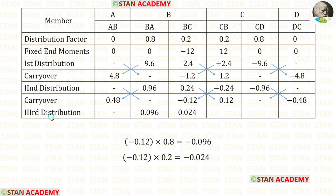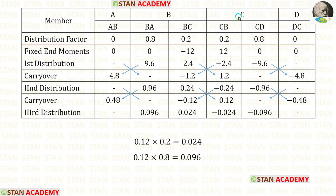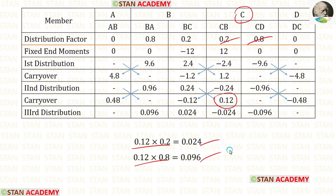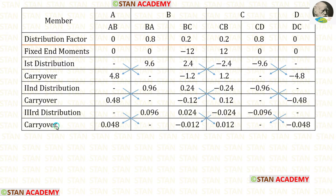Now let us do the third distribution. First let us do it in joint B — we have to multiply this value with the distribution factors. When we do that we are getting negative values, so we have to enter them as positive. Now let us do the distribution in joint C — we have to multiply this value with the distribution factors. When we do that we are getting positive values, so we have to enter them as negative. Now let us do the carry over by dividing these values by 2 and entering the answers.